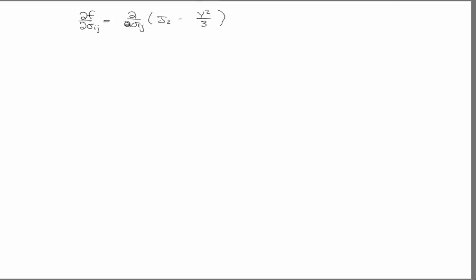Partial f partial sigma ij is equal to partial sigma ij j2 minus y squared over three. Well, y is a constant. It's not a function of sigma ij. So, this is, by inspection, going to be zero. And what we're left with is partial j2 partial sigma ij. Look familiar? Those of you that just did your homework? We know it's S-I-J. So few people did it correctly on the homework, I want to work it out.